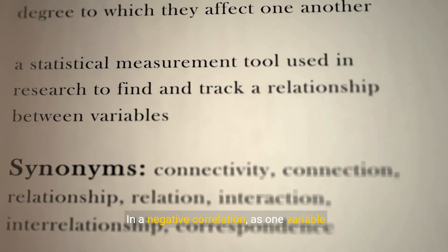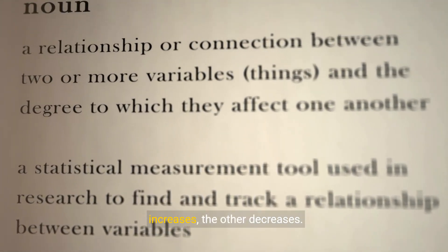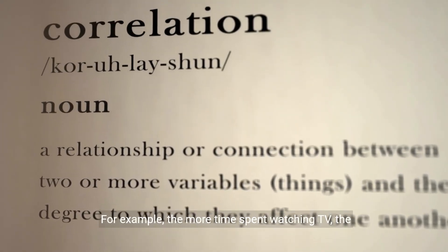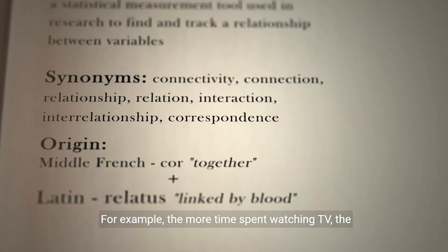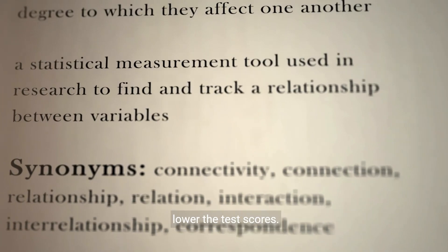In a negative correlation, as one variable increases, the other decreases. For example, the more time spent watching TV, the lower the test scores.